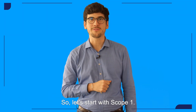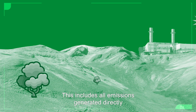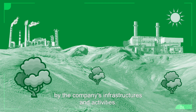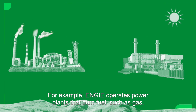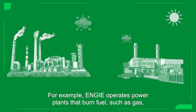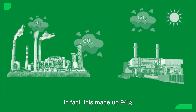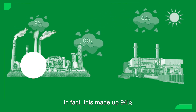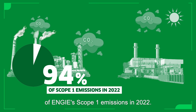Let's start with scope one. This includes all emissions generated directly by the company's infrastructures and activities. For example, Engie operates power plants that burn fuel, such as gas, and thus emits CO2. In fact, this made up 94% of Engie's scope one emissions in 2022.